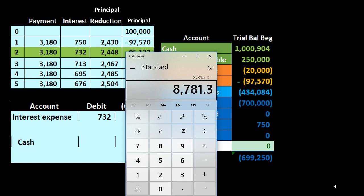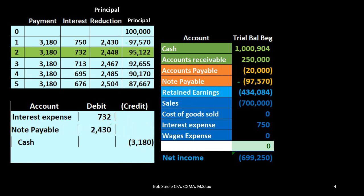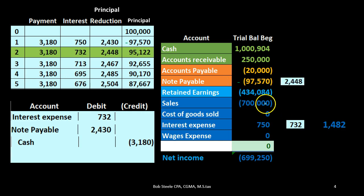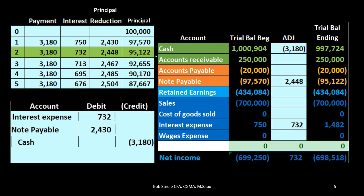That comes to approximately $732 as the interest portion. The rest goes to principal: $3,180 minus $732 gives the principal component. When we post this, interest expense goes up again in the debit direction, the loan goes down by the principal component to $95,122 — matching what's on our amortization table — and cash goes down. With the amortization table it's straightforward; we can always tie our loan balance to the table after each payment.